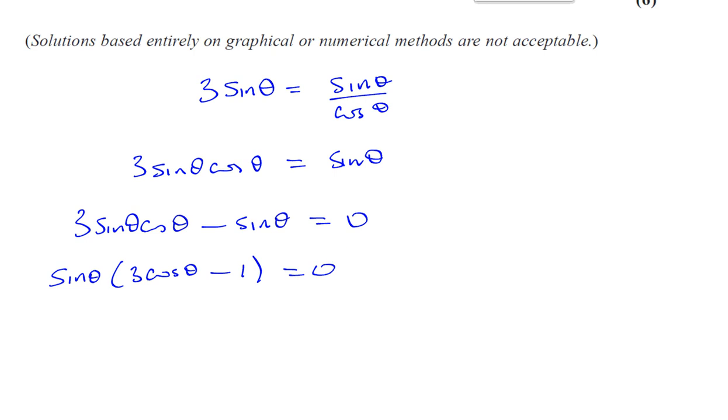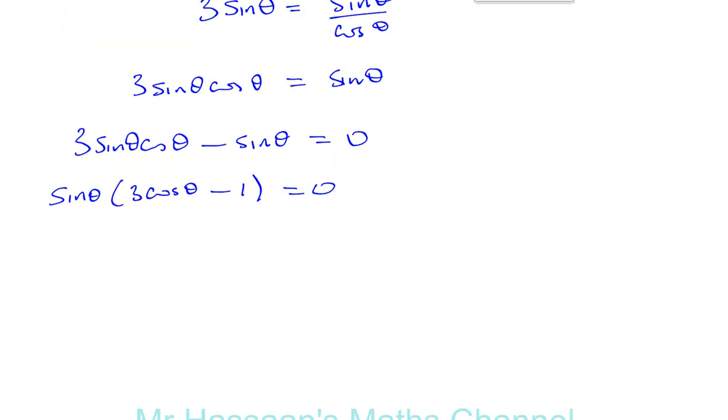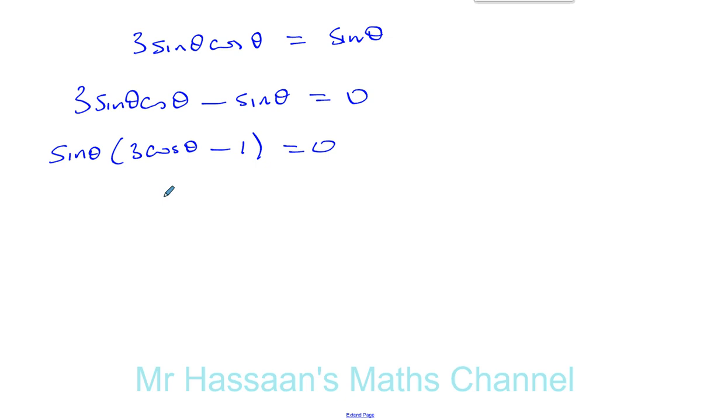And now we can say we've got a product of two factors that give you 0. So one of them, or both of them, must be 0. So we can say either sine theta equals 0. That will give you one set of solutions. Or we can say 3 times cosine theta minus 1 equals 0, in which case cosine of theta will be 1 third.